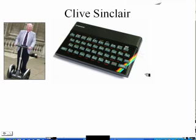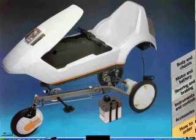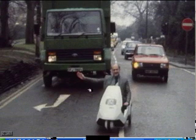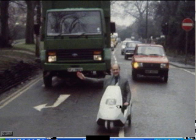Look at Clive Sinclair — he came up with an early calculator, then an early computer, and then his strange bicycle. Here's one of his ideas. When you look at it in traffic, the person looks incredibly vulnerable. It was a poor idea.